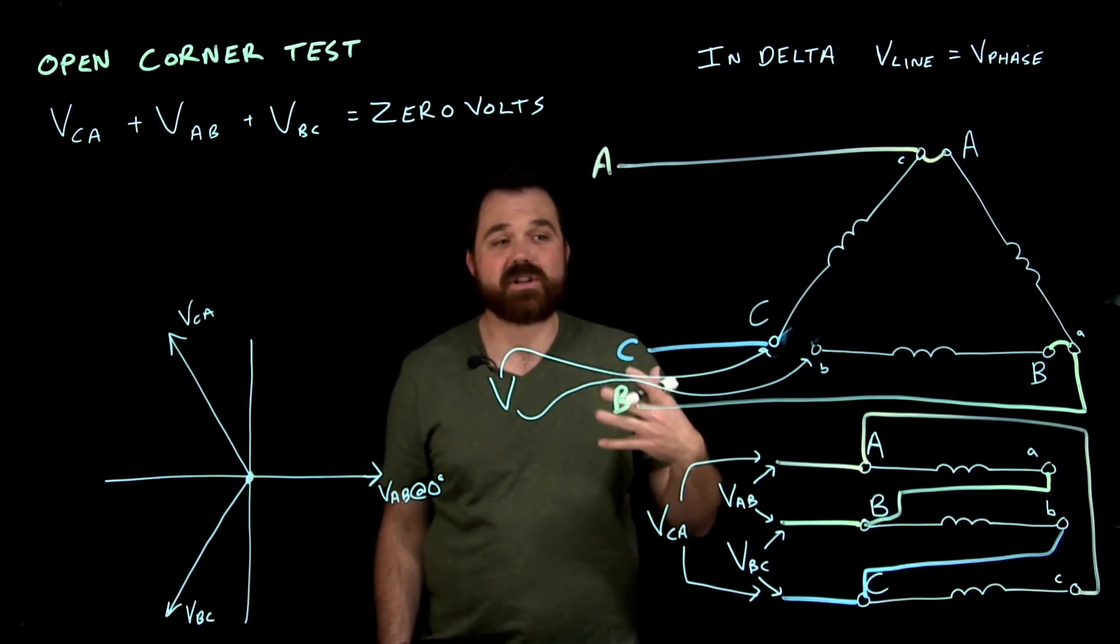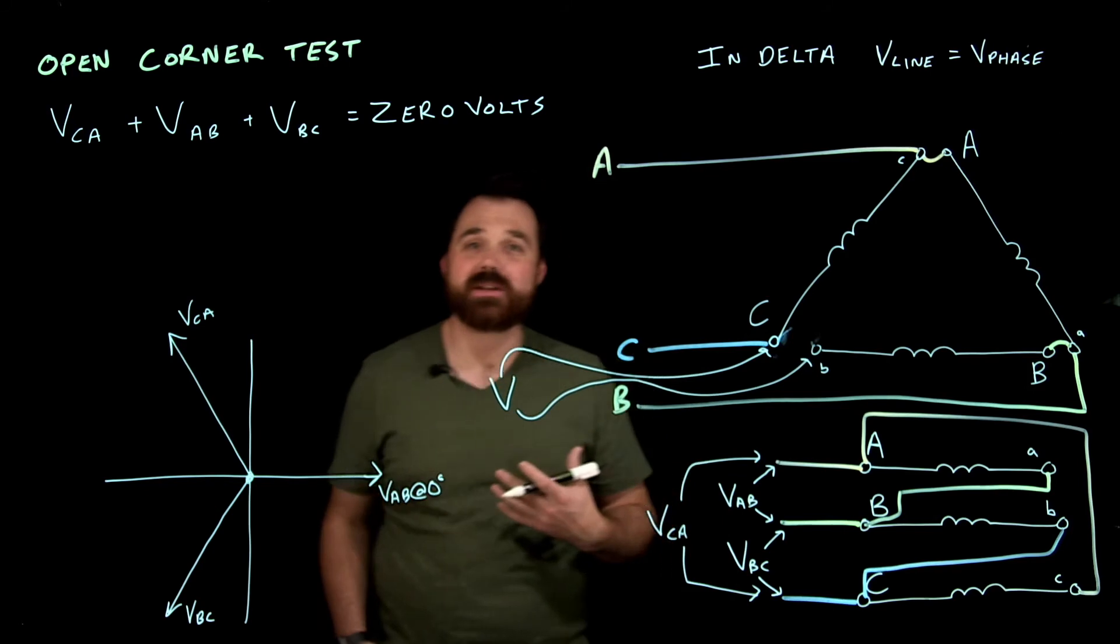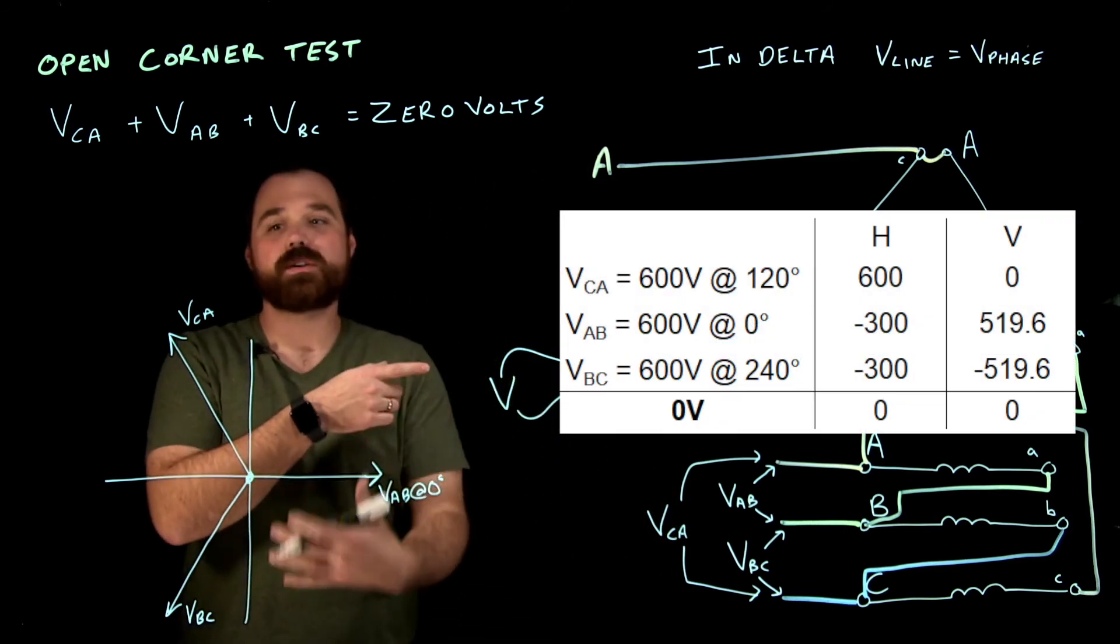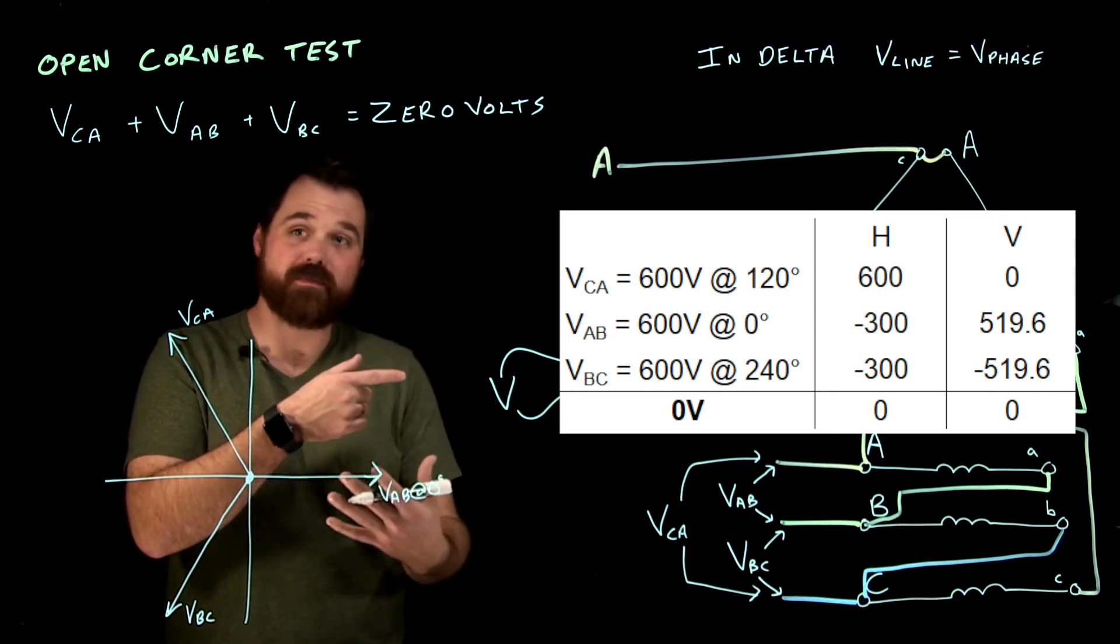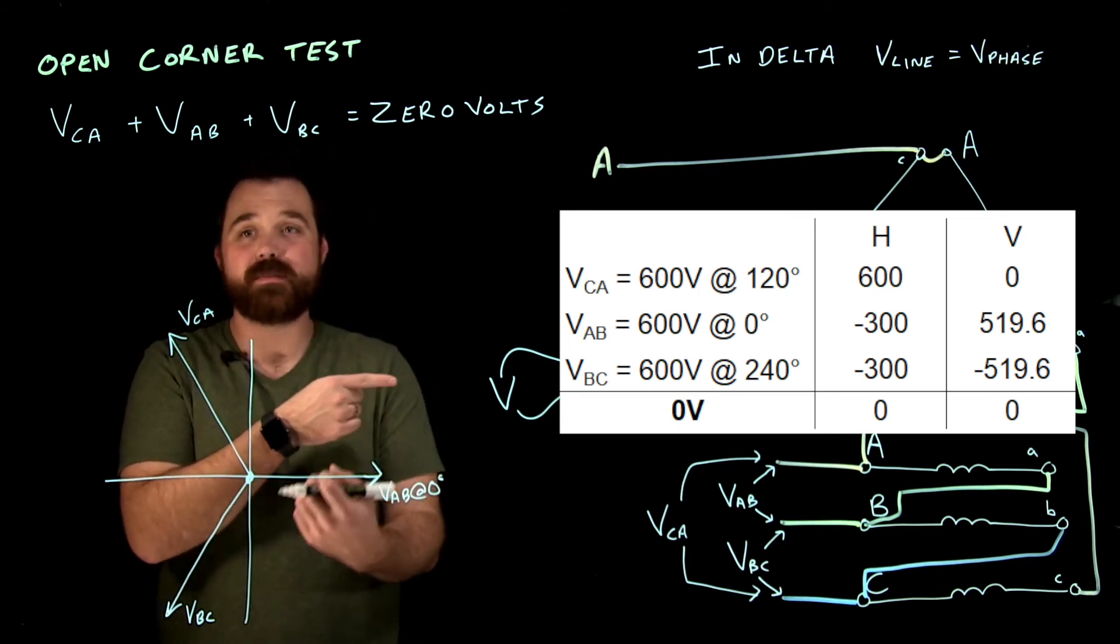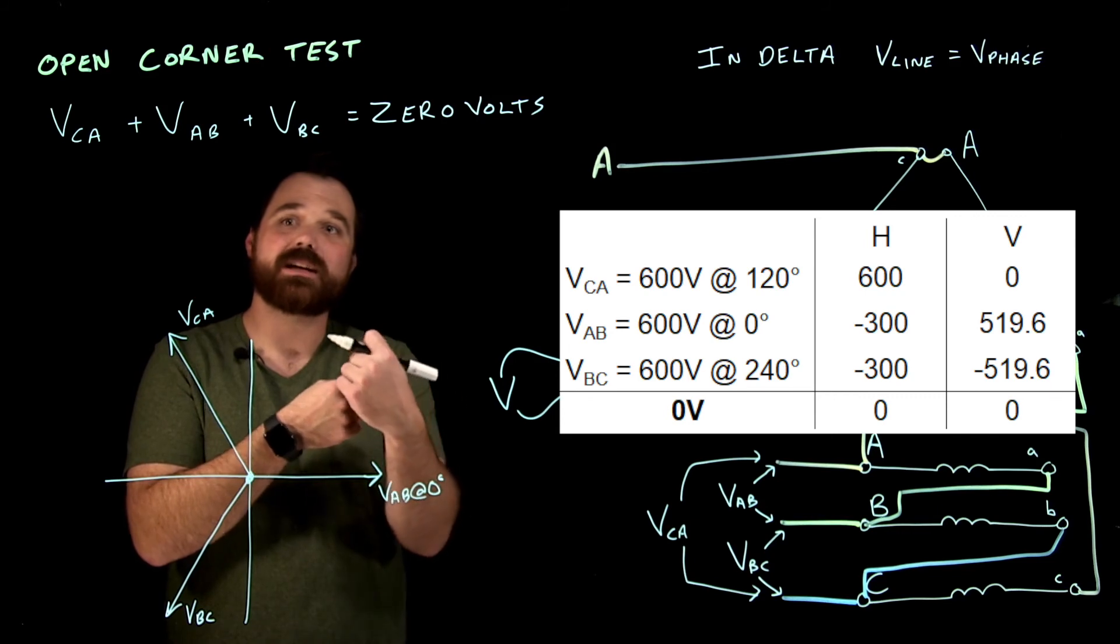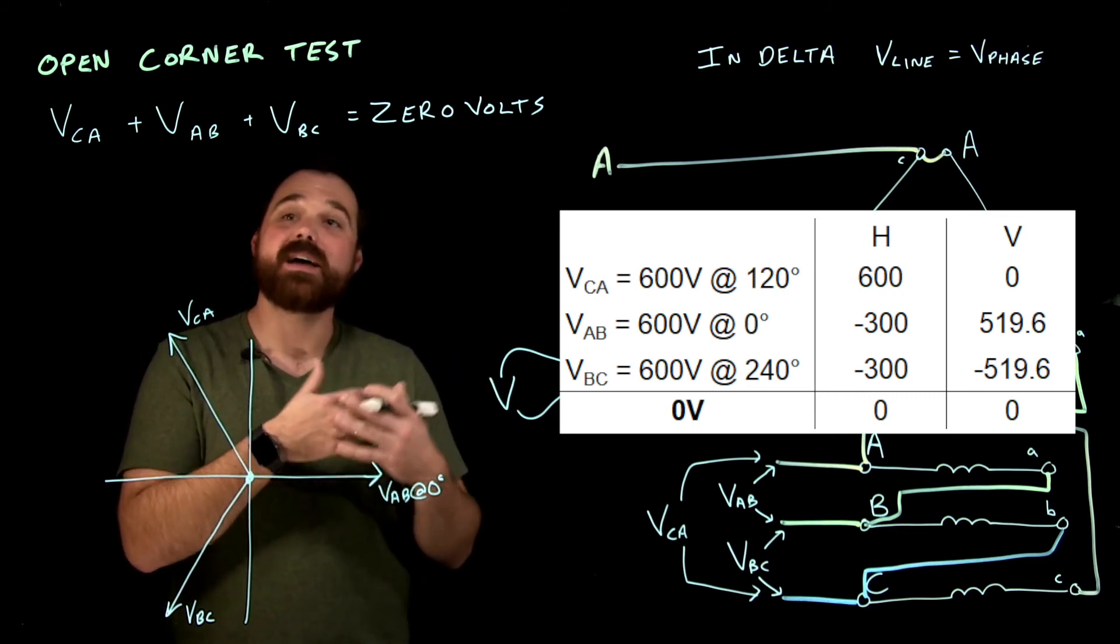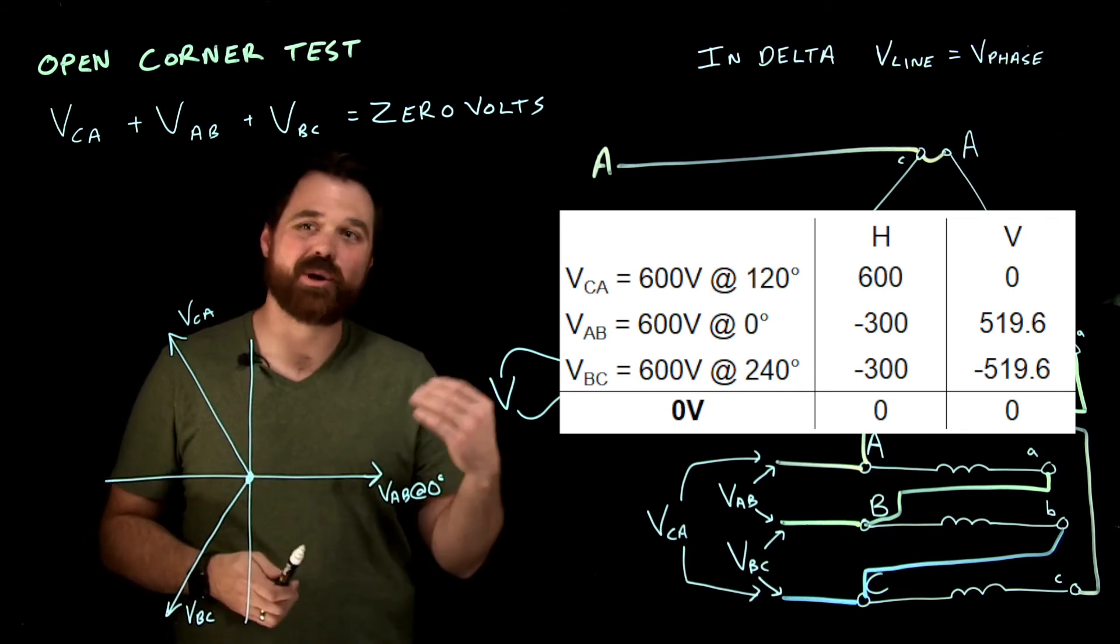And you can do all that in an HV chart, which would look something like this. I add up all those, 120 at or whatever my voltage is at 120 degrees plus my voltage at zero plus my voltage at 240. In this case, I used 600 volts. And again, that at the bottom equals zero volts.